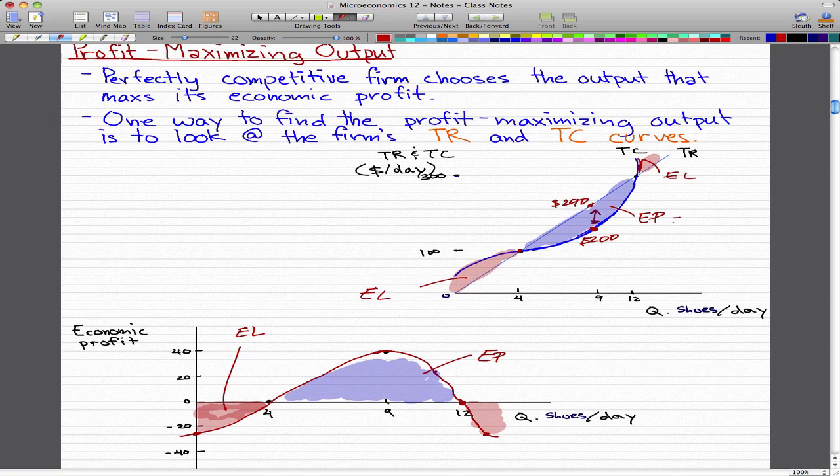And remember, economic profit or economic loss can be achieved from taking total revenue minus total costs. So what we see here is that at low output levels, the firm incurs economic loss. It can't cover its fixed costs. At intermediate output levels, the firm makes an economic profit.